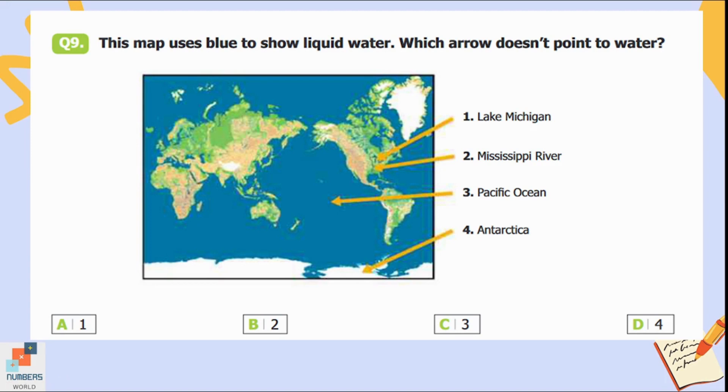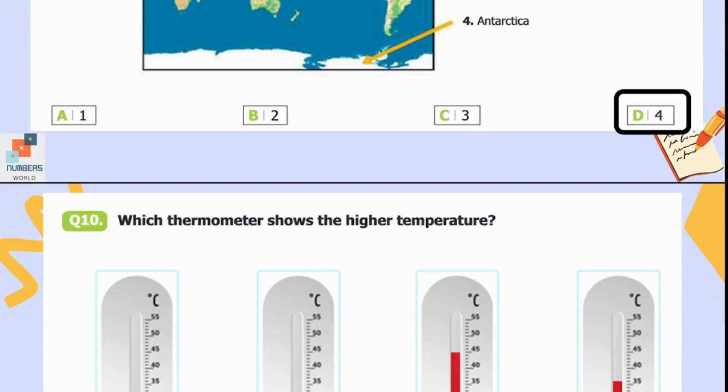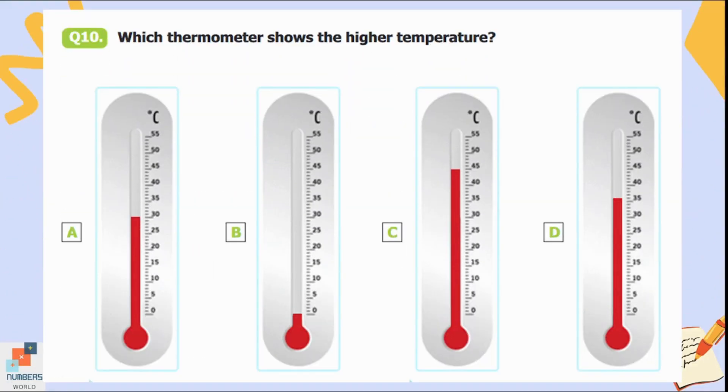Question number ten: Which thermometer shows the higher temperature? In the first thermometer, the temperature is 30 degrees Celsius. In the second thermometer, the temperature is zero degrees Celsius. In the third thermometer, the temperature is 45 degrees Celsius, and in the last thermometer, the temperature is 36 degrees Celsius. So option C is the correct answer. The thermometer given in this option is showing the highest temperature of all.